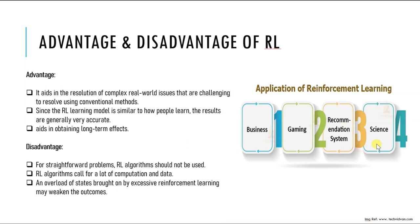Another application is healthcare. Reinforcement learning has been used for drug discovery, personalized treatment, and clinical decision making. For example, it has been used to optimize cancer treatment and to develop personalized insulin dosage for diabetic patients. AI is everywhere and we are just one step away from applying it.